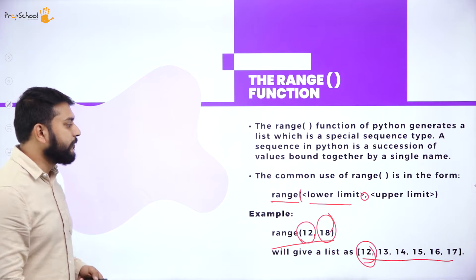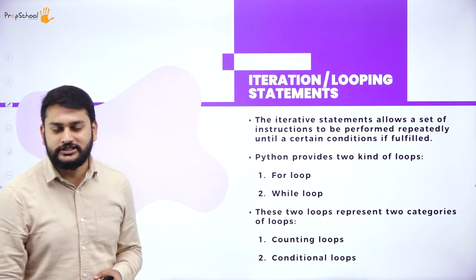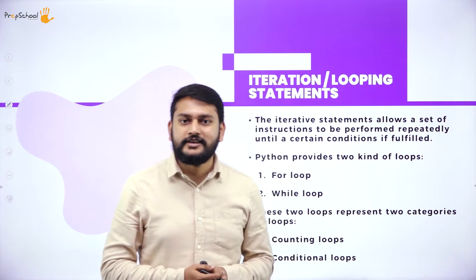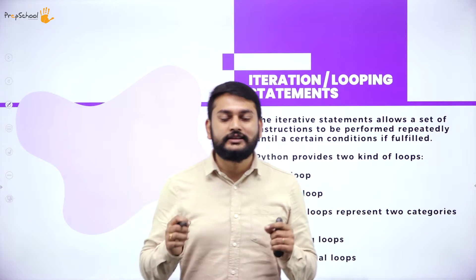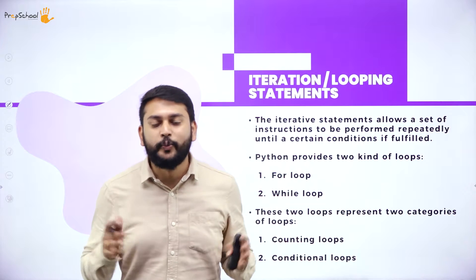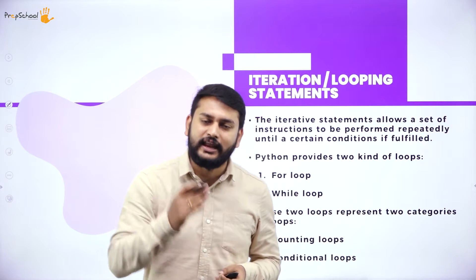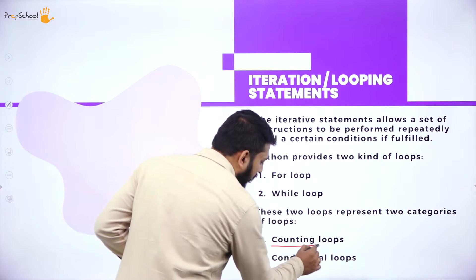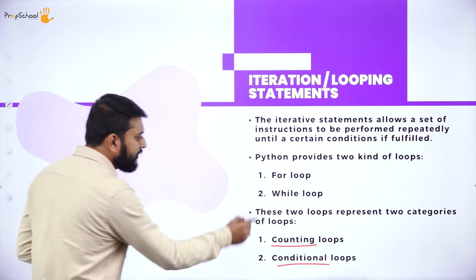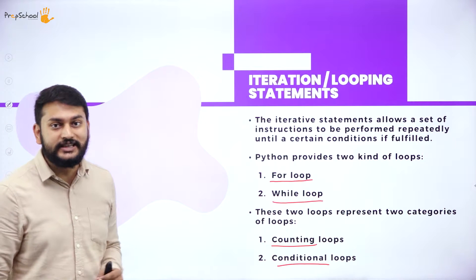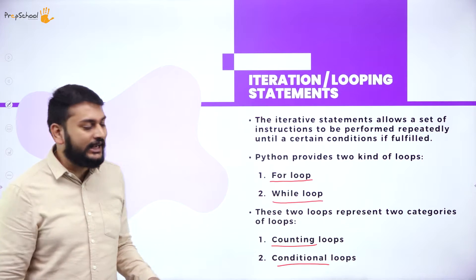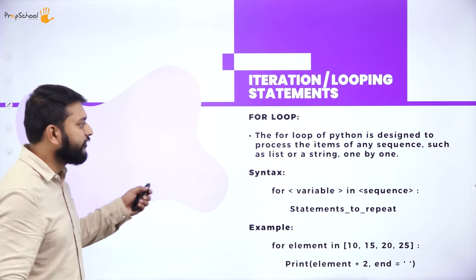Next are iterative or looping statements. If you are doing a task repeatedly again and again until you satisfy some condition or count, that is what we call a loop. We have two different types of loops: a for loop and a while loop.